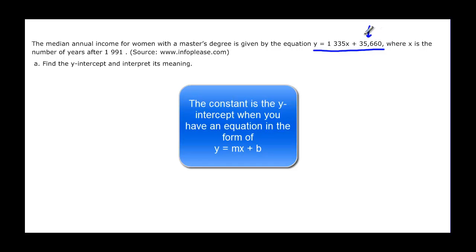Find the y-intercept and interpret its meaning. Remember that here's our equation and we said that the constant was always going to be our y-intercept if it was a y equal equation. So our y-intercept is going to be (0, 35,660).